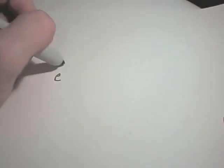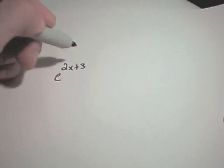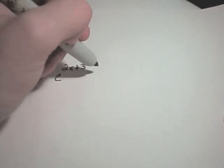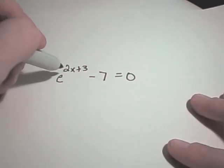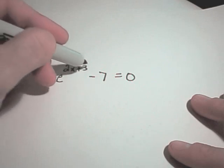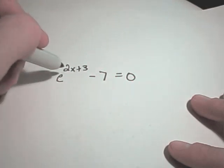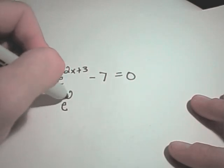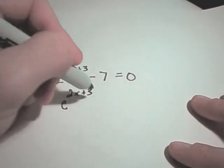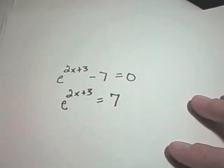Suppose we have the following problem. Suppose we have e to the 2x plus 3 minus 7 equal to 0 and again we want to solve this for x. We'll do the same thing. My variable is now trapped up as an exponent. I'm going to get the part, the term with the x in it by itself and to do that I'll simply add 7 to both sides.